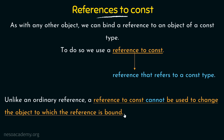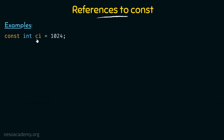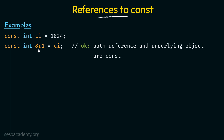Let's take some examples to understand this better. Here I am declaring a variable called ci which is of the type integer and it is also a constant, initialized to the value 1024. Next, I am defining a reference called r1, which is of the type integer and it is also a constant, and I am binding it to ci. This is a reference to a const because it is declared as a constant type and we are binding it to ci, which is also a constant type object. Both the reference and the underlying object are constants, which is the proper way of defining references to const.